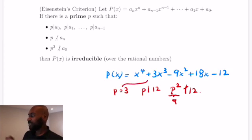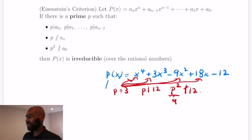Furthermore, this prime 3 divides all of the intermediate coefficients, 3, negative 9, and 18, and it doesn't divide the leading coefficient of this polynomial whatsoever. And so, by this Eisenstein's criterion, we can say this polynomial is definitively irreducible.